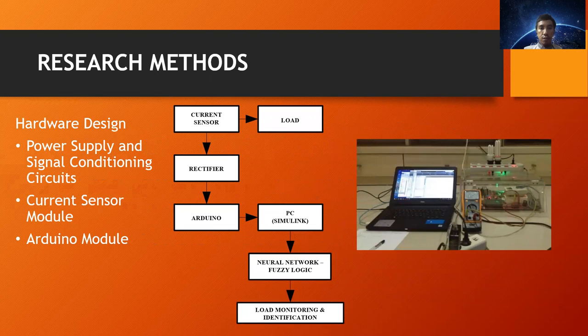Next, the research methods that we describe in this slide. For the first, in hardware design, we describe a prototype of this system in this figure. The hardware design consists of one current sensor and a signal conditioning circuit or rectifier, and Arduino Uno as interface device, and then laptop and five electronic device as a load consisting of TV, lamp, refrigerator, fan, and dispenser.